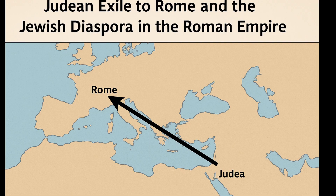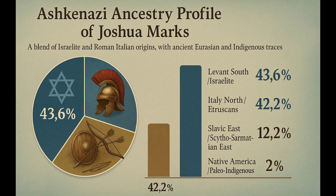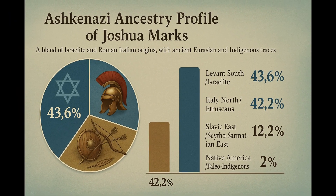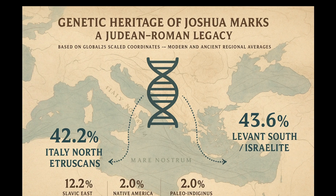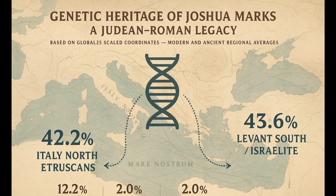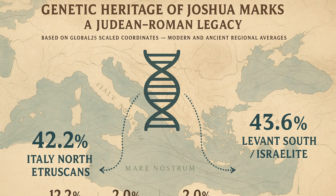The remaining 10-15% comes from Eastern Europe, mostly places like Poland and Ukraine. This represents the more recent phase of Ashkenazi history, during the Middle Ages, when Jewish communities settled and grew across the Slavic world. I also saw minor signals from France, North Africa, and the Iranian plateau — regions that may reflect shared ancient ancestry, historic trade routes, or small-scale intermarriage over generations.